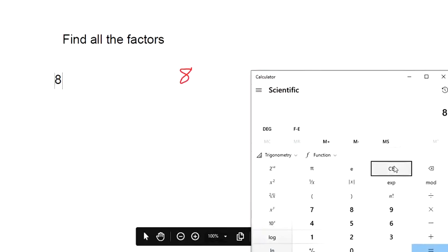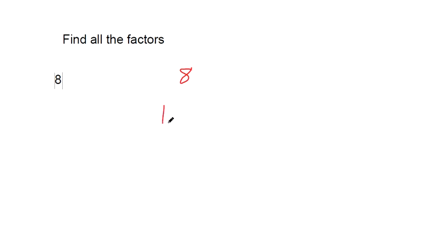So, let's start with 1. 8 divided by 1 makes 8. It doesn't make any decimals, so that means 1 is a factor.